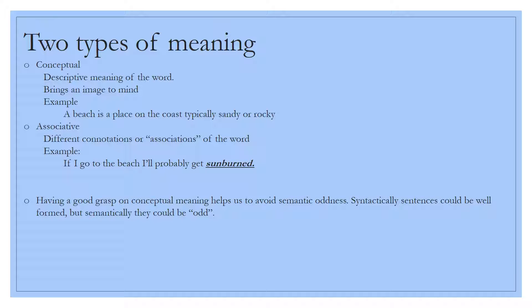There are two types of meaning. One is conceptual and one is associative. Conceptual meaning is the descriptive meaning of the word, typically what is in a dictionary. It brings an image to your mind. The example that I have here is a beach is a place on the coast, typically sandy or rocky. That's typically what comes to our mind when we think of a beach. The example in our book also referenced that a needle is a thin, sharp instrument that gives you a true definition and brings an image to your mind.